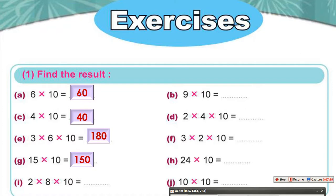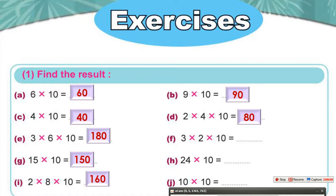2 times 8 times 10: multiply 2 by 8 first — 2 times 8 equals 16 — then 16 times 10 equals 160. 9 times 10 equals 90. 2 times 4 times 10: 2 times 4 equals 8, so 8 times 10 equals 80. 3 times 2 equals 6, so 6 times 10 equals 60. 24 times 10 equals 240. 10 times 10 equals 100.